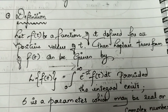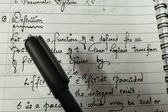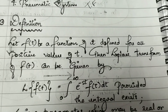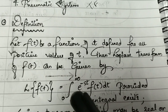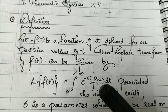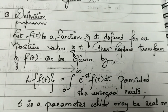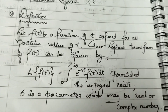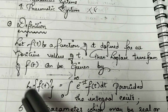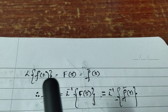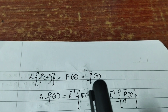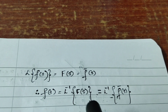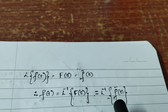Now let's define it. Let f(t) be a function of t defined for all positive values of t. Then the Laplace transform of f(t) is given by: L{f(t)} = integral from 0 to infinity of e^(−st) f(t) dt, provided the integral exists, where s is a parameter which may be a real or complex number. This L is known as the Laplace operator. L{f(t)} is denoted by capital F(s), and therefore f(t) = L⁻¹{F(s)}.